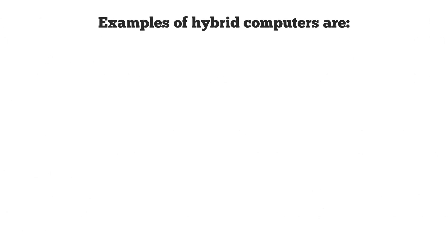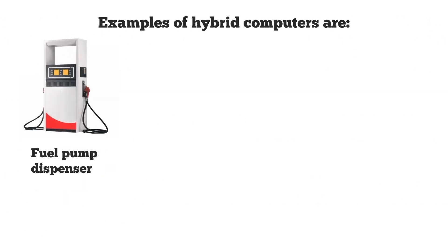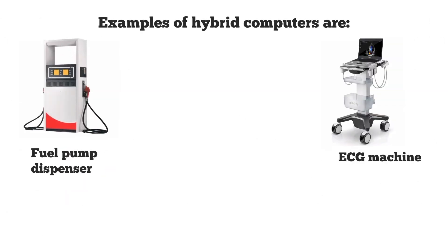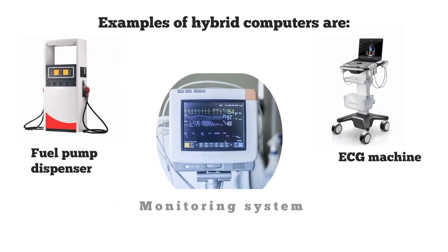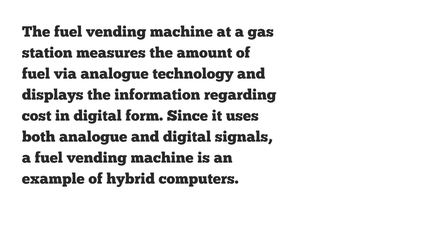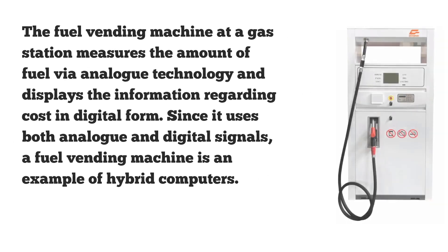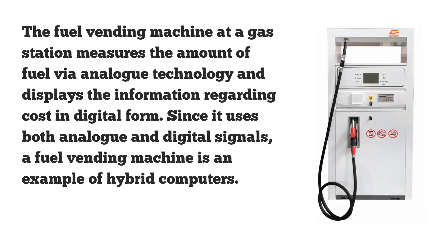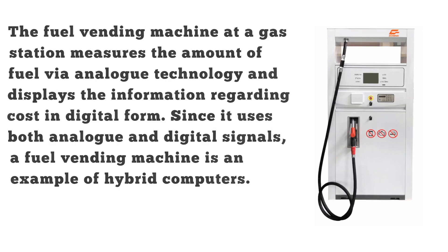Examples of hybrid computers include fuel pump dispensers, ECG machines, and hospital monitoring systems. The fuel vending machine at a gas station measures the amount of fuel via analog technology and displays information regarding cost in digital form. Since it uses both analog and digital signals, a fuel vending machine is a significant example of a hybrid computer.